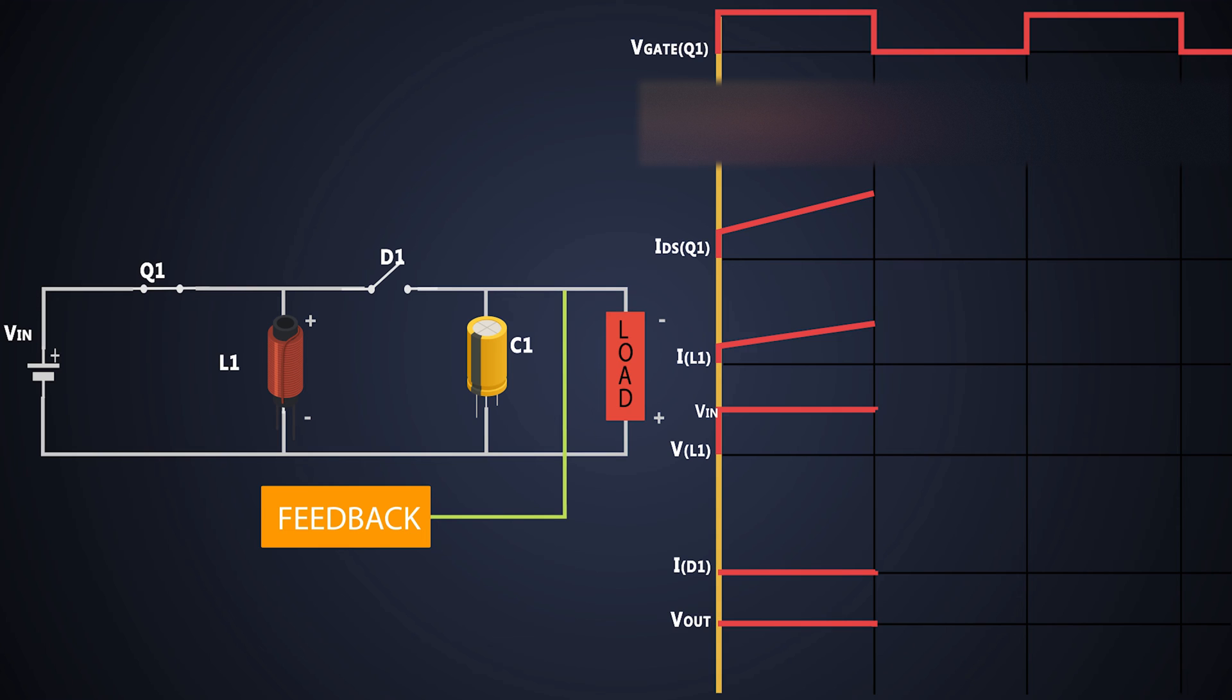Now in the second cycle, the MOSFET is turned off. The current flowing through the MOSFET falls to zero immediately. Now the inductor starts providing energy which it had stored in the earlier cycle. So the inductor current starts decreasing.